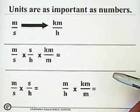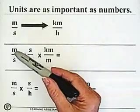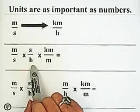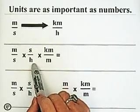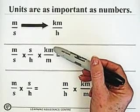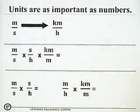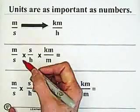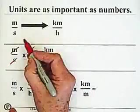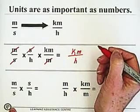We can do it in two different ways. We can do it in one step — start with our meters per second, multiply it by a conversion factor that shows the relationship between seconds and hours, and then multiply by another conversion factor that shows the relationship between kilometers and meters. Our seconds will cancel, our meters will cancel, and we'll be left with the units of kilometers per hour.